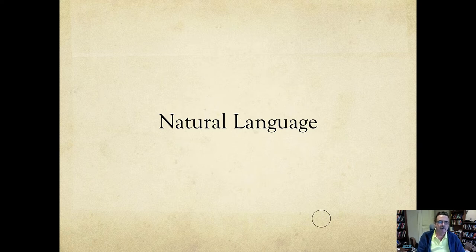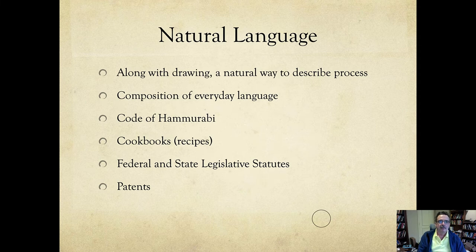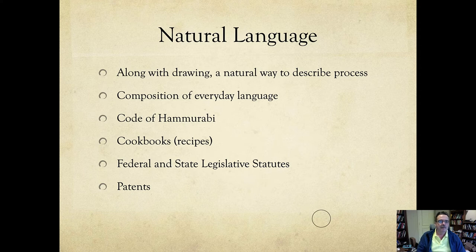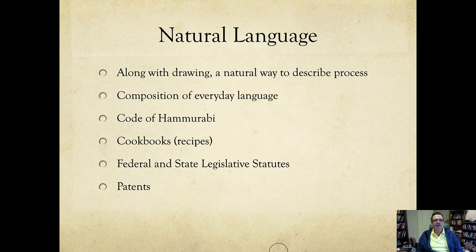We're also going to cover natural language in terms of implicit process. Natural language is a kind of modeling, so in conjunction with drawing, natural language is a natural way to describe processes. We grow up and learn a language — I'm using English, but there are thousands of languages. Going back in time, we find things like the Code of Hammurabi, which is clearly an encoding of process in the form of rules.